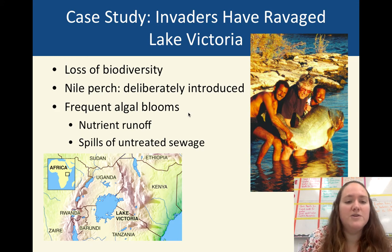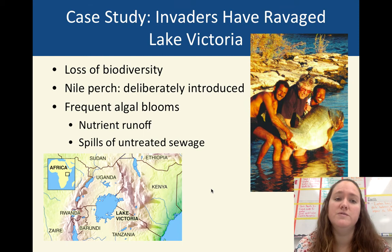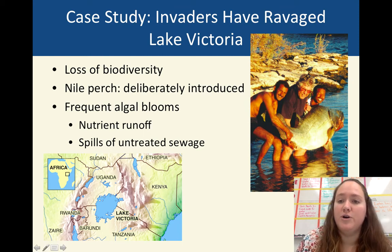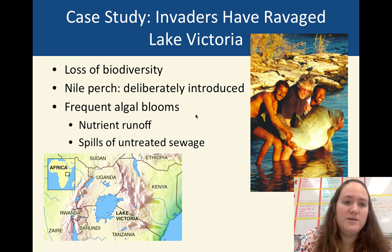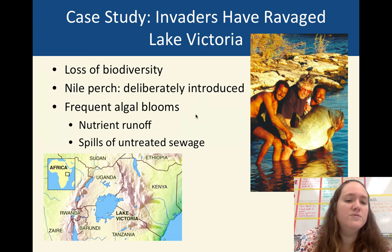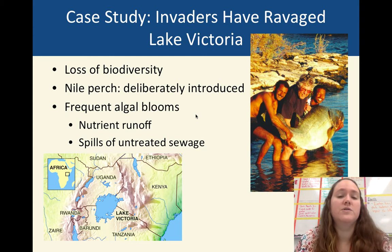Looking at Lake Victoria — here's a map of it; it's in Africa. Some of the most impactful things humans are doing there include introducing invasive species like the Nile perch. You can see how massive this fish can get. We can use it for food but apparently it's not very good, so people usually don't. But it does eat everything else. We're also adding nutrients, which is increasing algal blooms, and putting sewage into the lakes and rivers, causing further algal bloom problems.